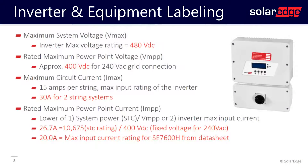Labeling is always tricky. In the 2014 code, section 690.53 calls out for a PV system characteristics label. Specifically, they want to know what the VOC, VMP, ISC, and IMP of the system is.